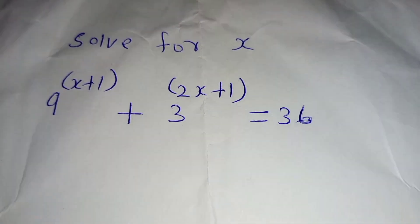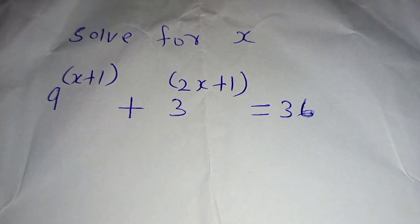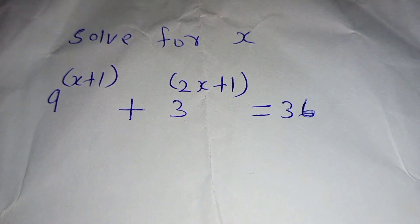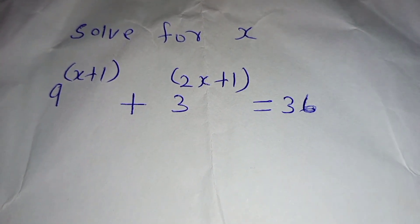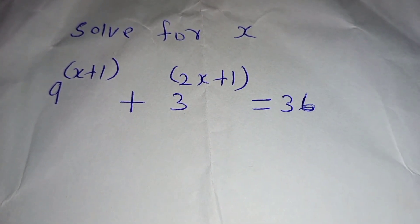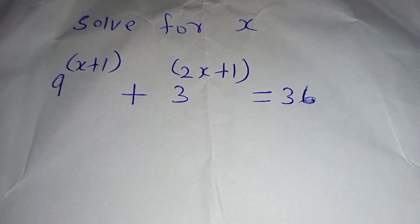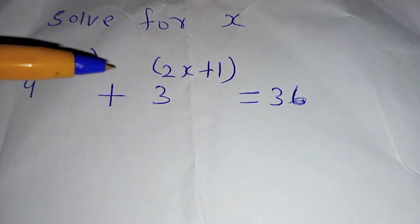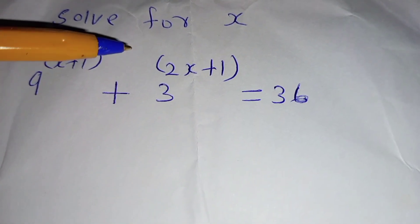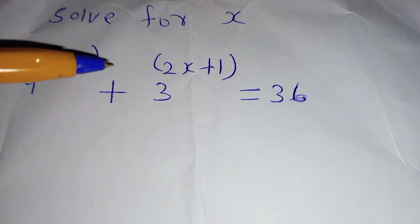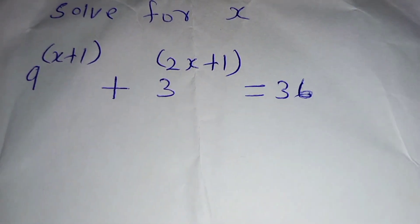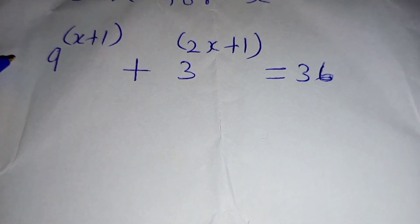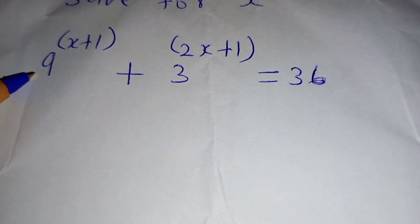Hello, welcome to mathematics. We are supposed to solve for x given 9 to the power of (x plus 1), plus 3 to the power of (2x plus 1), is equal to 36. So the first thing we are going to write this line.